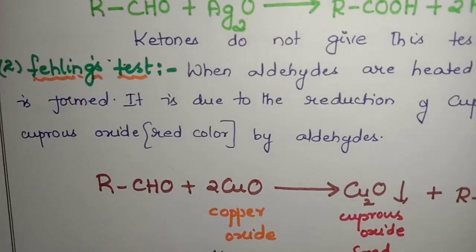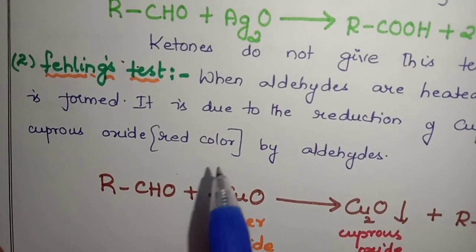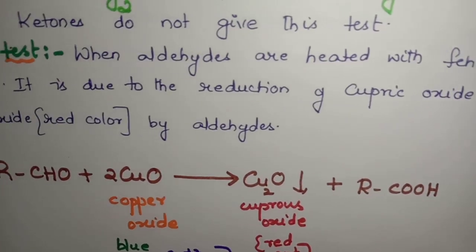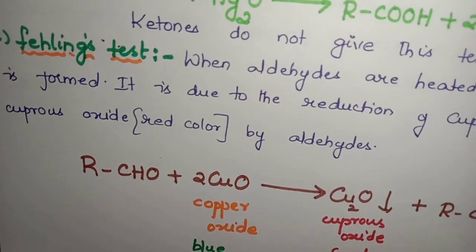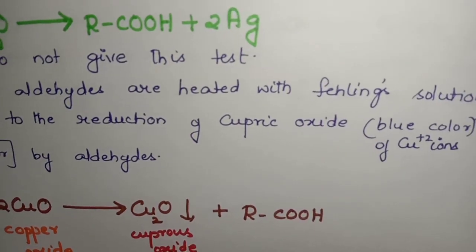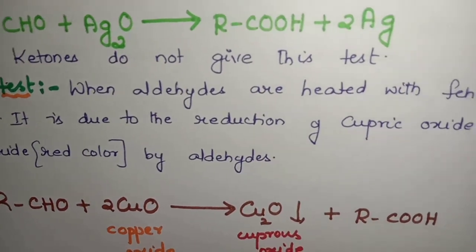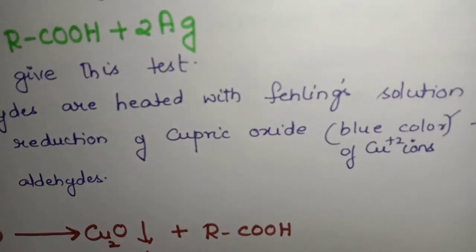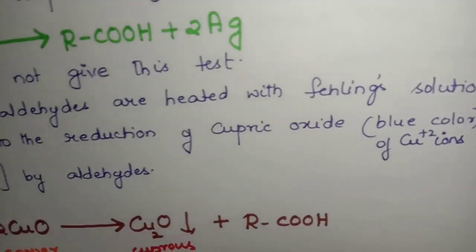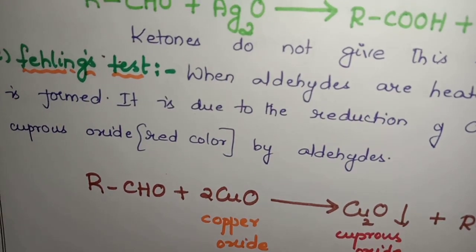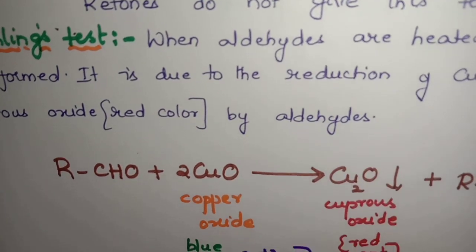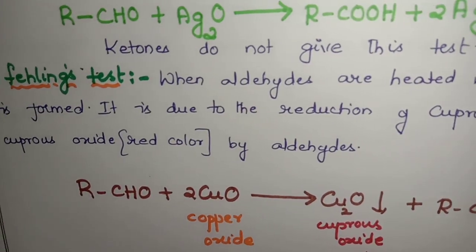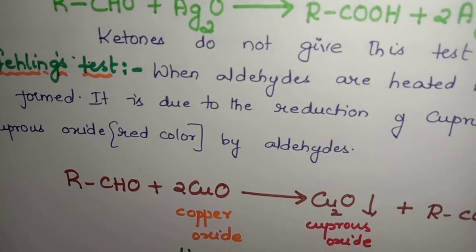The second one is Fehling's test. What is Fehling's test? When aldehydes are heated with Fehling's solution, red precipitate is formed. When aldehydes are treated with Fehling's solution, red precipitate is being formed. This is due to the reduction of copper oxide or cupric oxide. The Cu+2 ions which possess blue color are being reduced into cuprous oxide which has a red color.